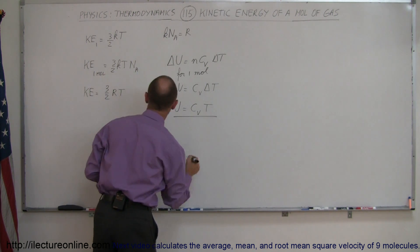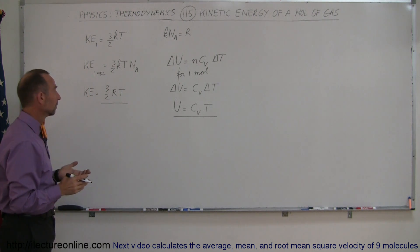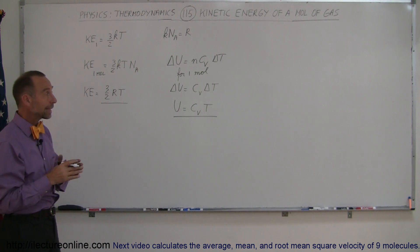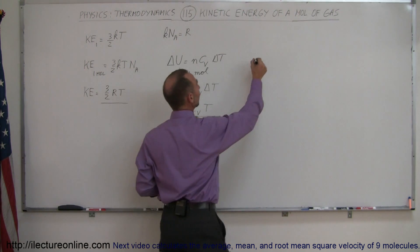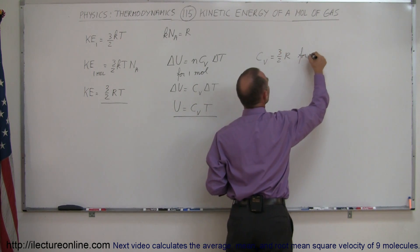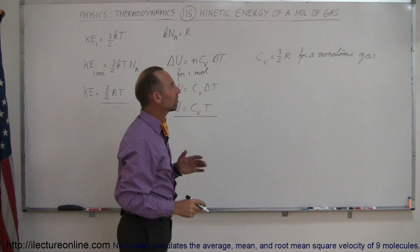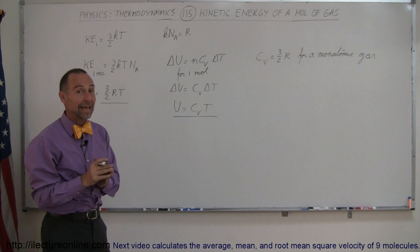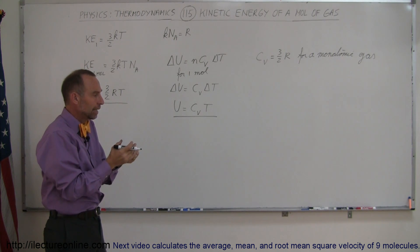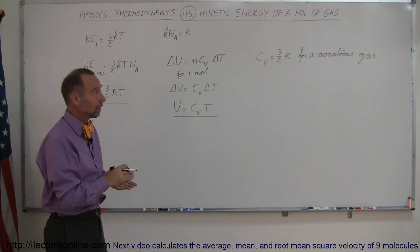If we look at both equations, we can ask: is C sub V equal to 3 over 2 R? And the answer is, for a monatomic gas, it is. C sub V is equal to 3 over 2 R for a monatomic gas. The reason is that the only place a monatomic gas can get its energy from is through translational motion, and translational motion is kinetic energy.